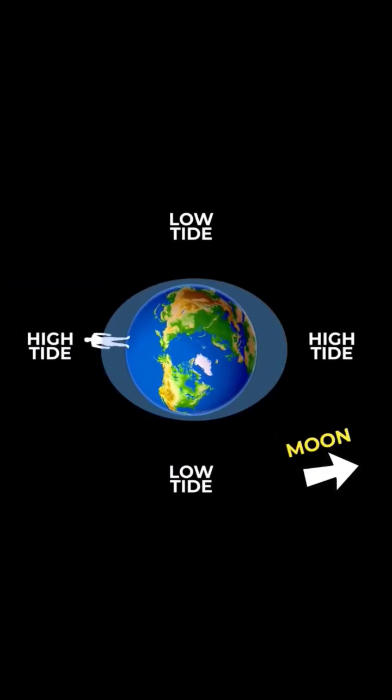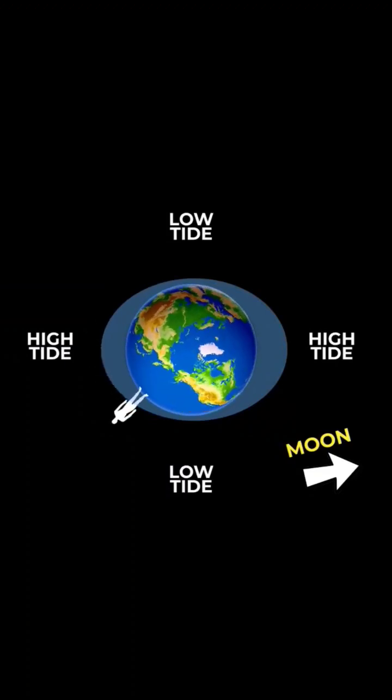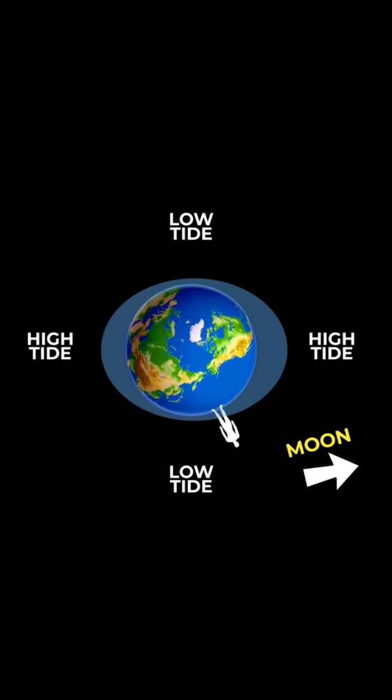These tidal bulges give rise to high tides in the areas facing the Moon and in the directly opposite regions, resulting in low tides.